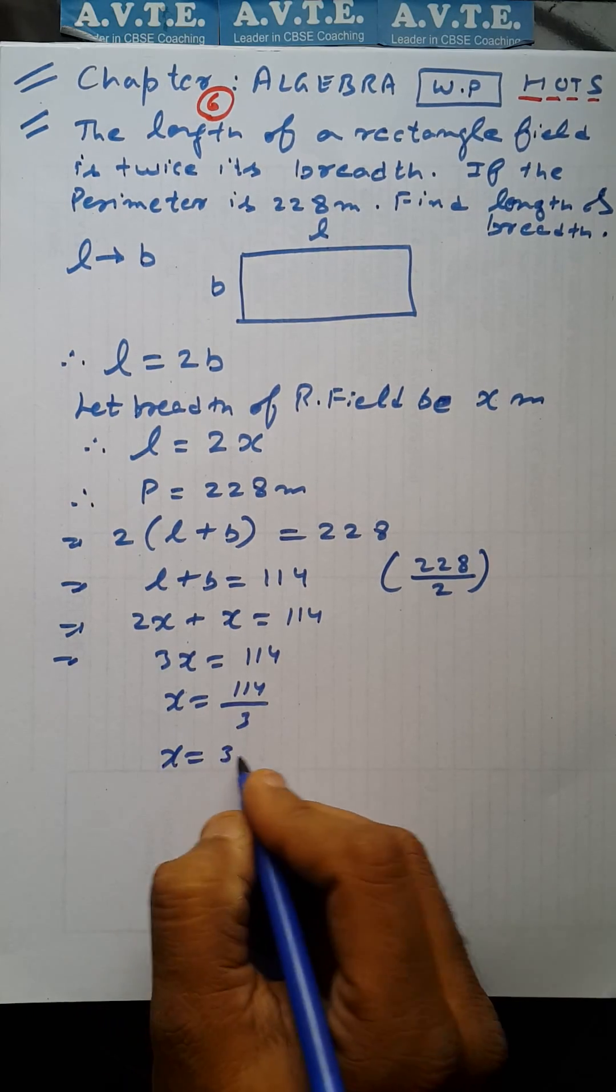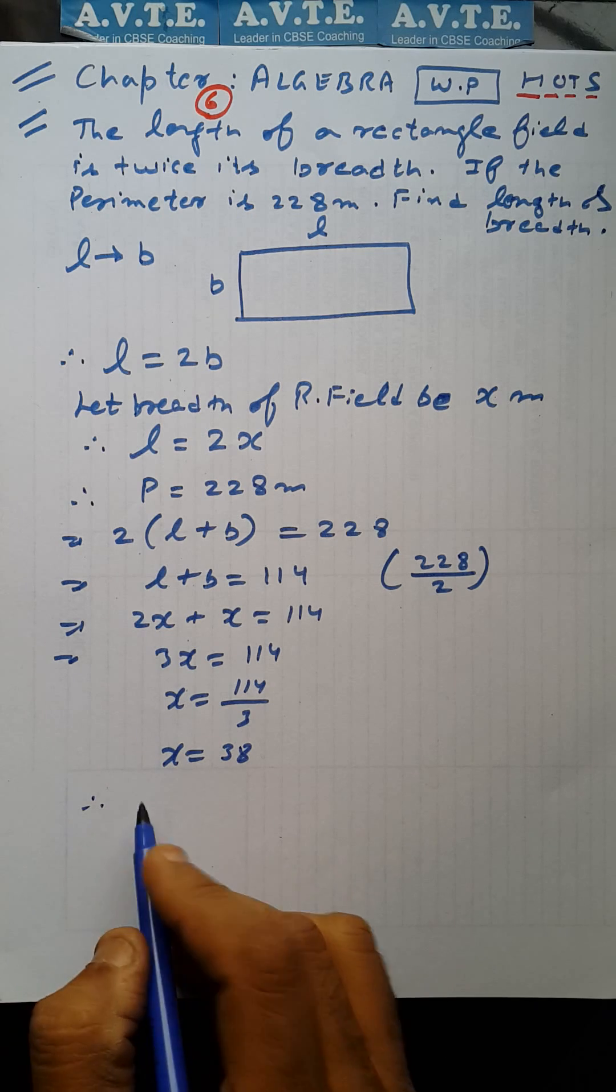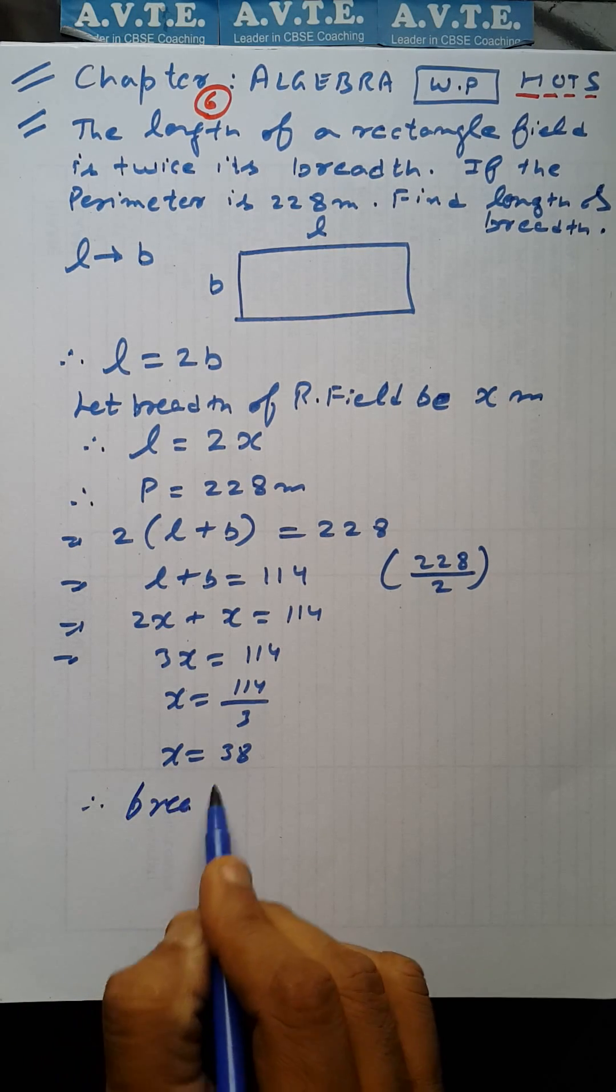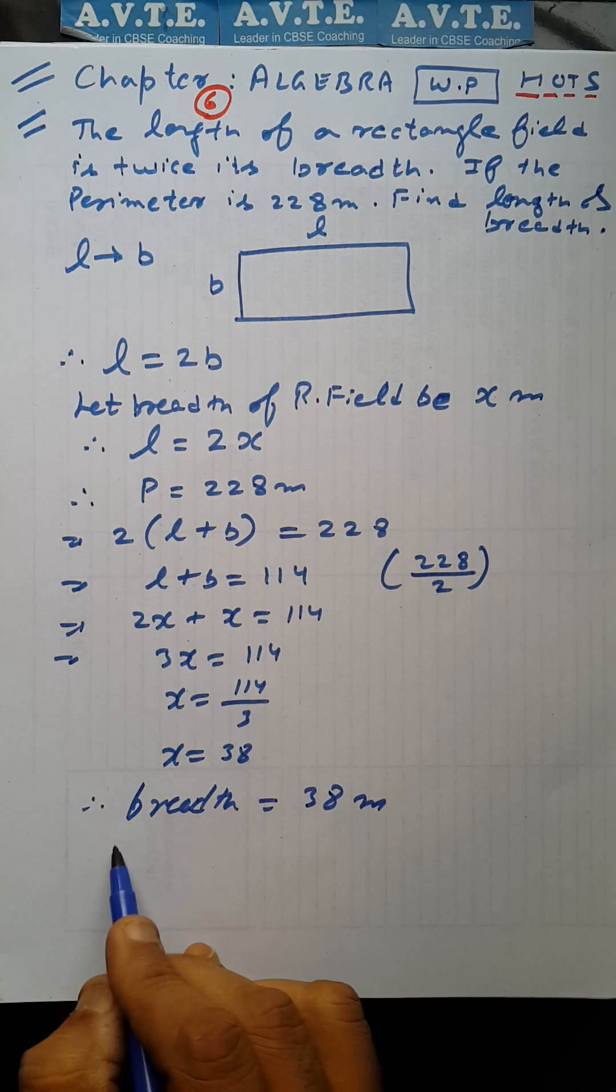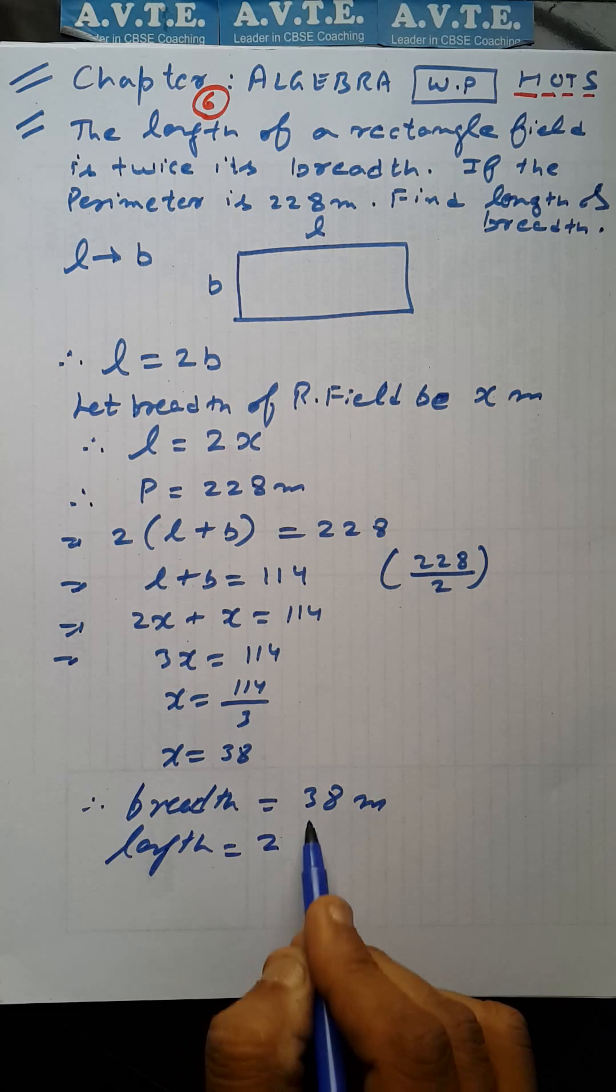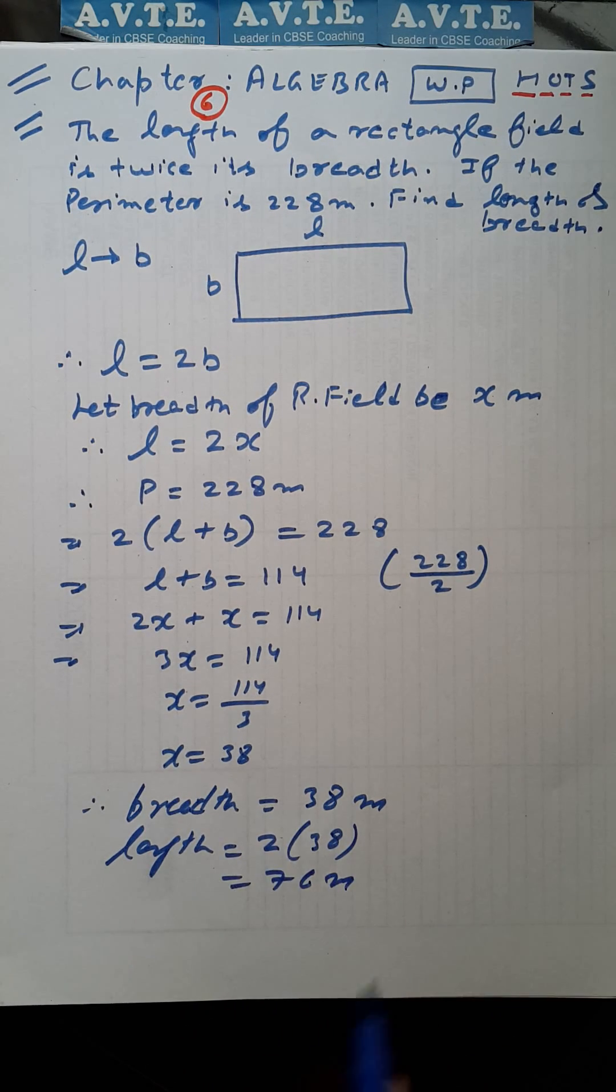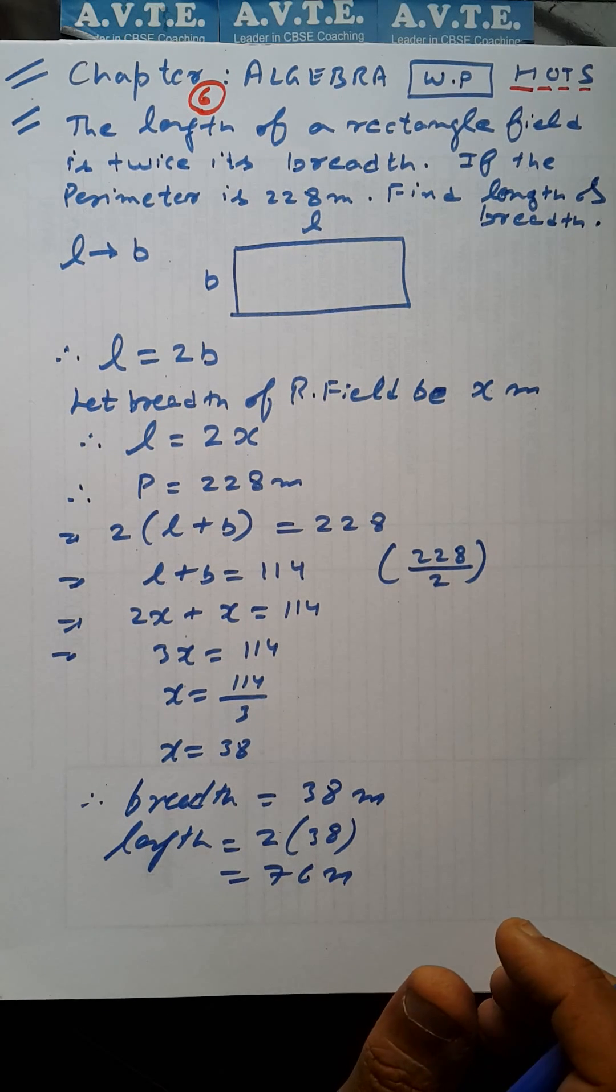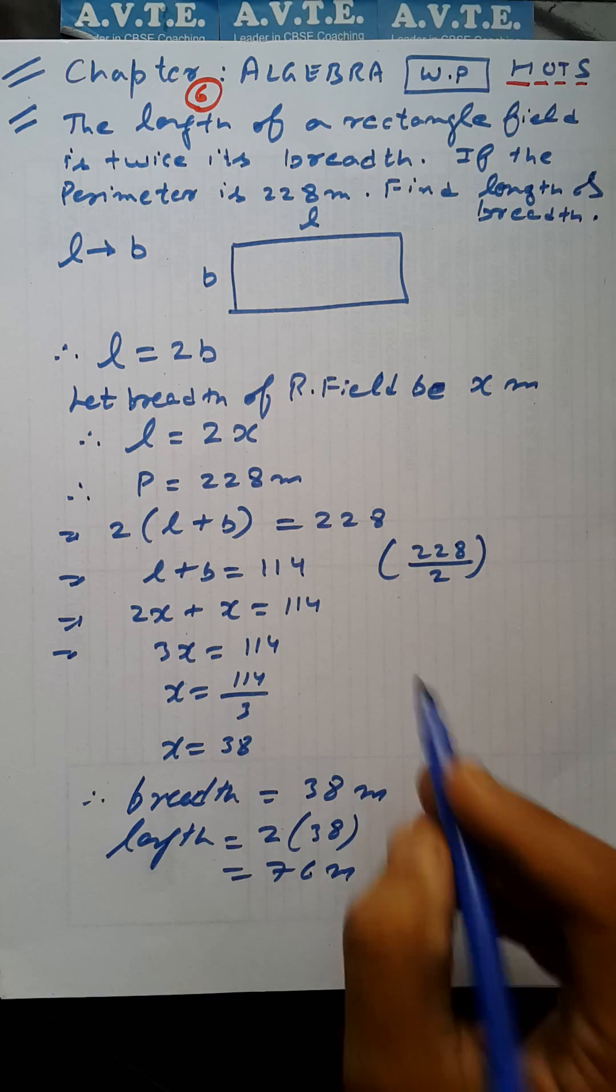Means the breadth of the field is 38 meters and length of the field is twice its breadth, that is 76 meters. It's a simple question for class maybe 7th, 8th, 9th, but class 6 students have to understand first the language.